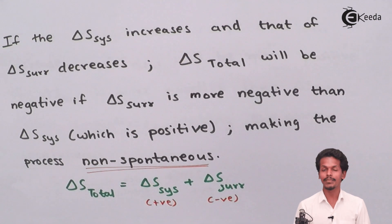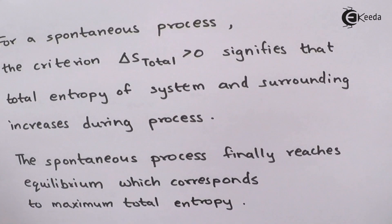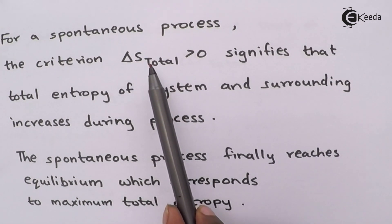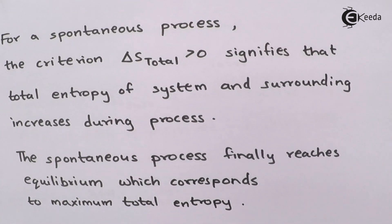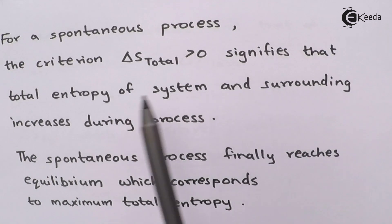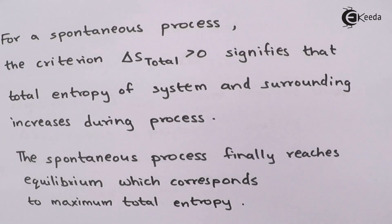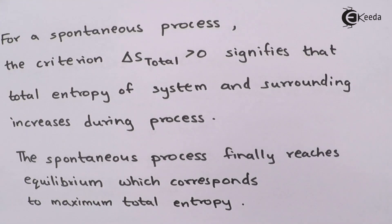For a spontaneous process, the criterion is that ΔS_total must be greater than zero. If the total entropy is positive, it signifies that the total entropy of the system and surroundings is increasing. From the Second Law of Thermodynamics, if ΔS_total > 0, it means the entropy of both the system and the surroundings are together increasing.